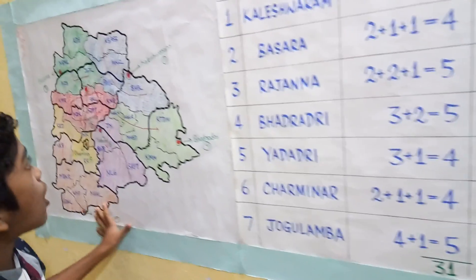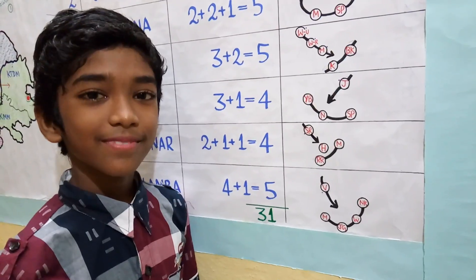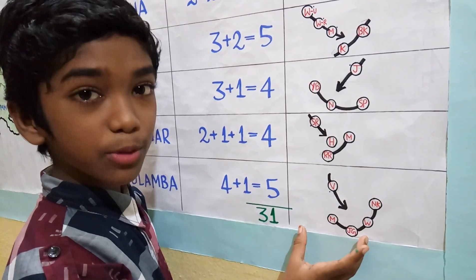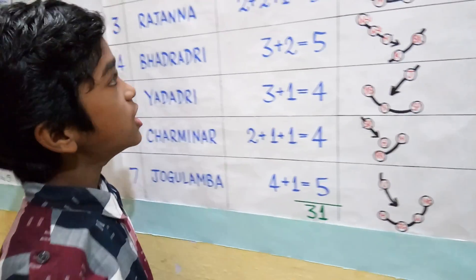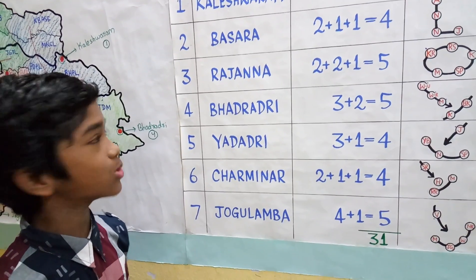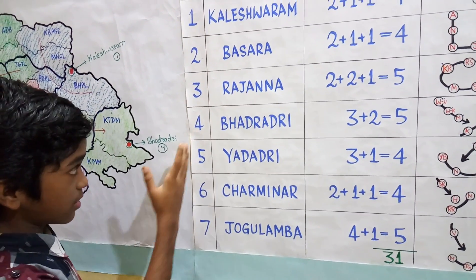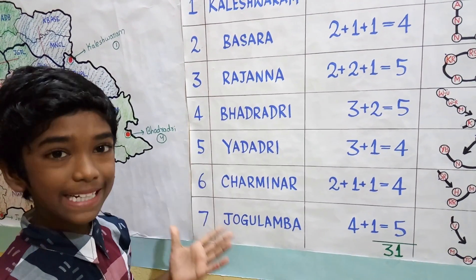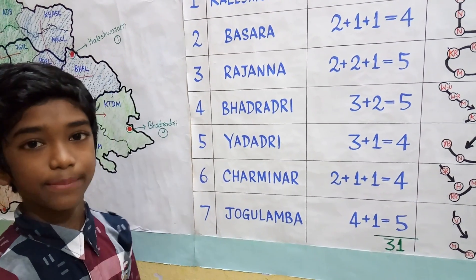So, we have completed all the zones of Telangana. These 7 zones are divided into 2 multi-zones: zones 1 to 4 come under multi-zone 1, and zones 5 to 7 come under multi-zone 2. Thank you.